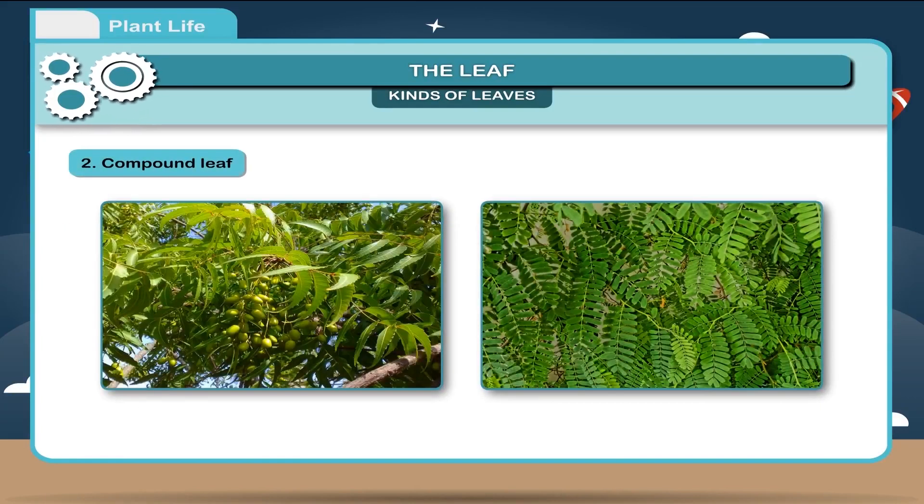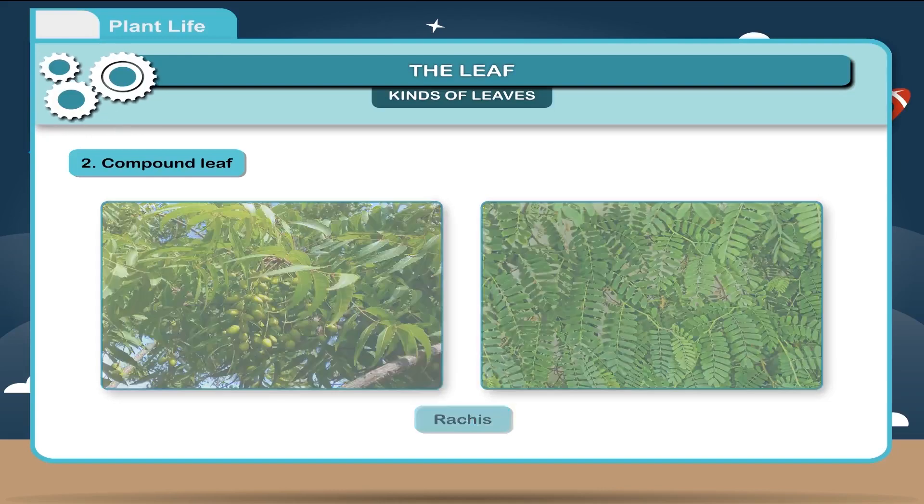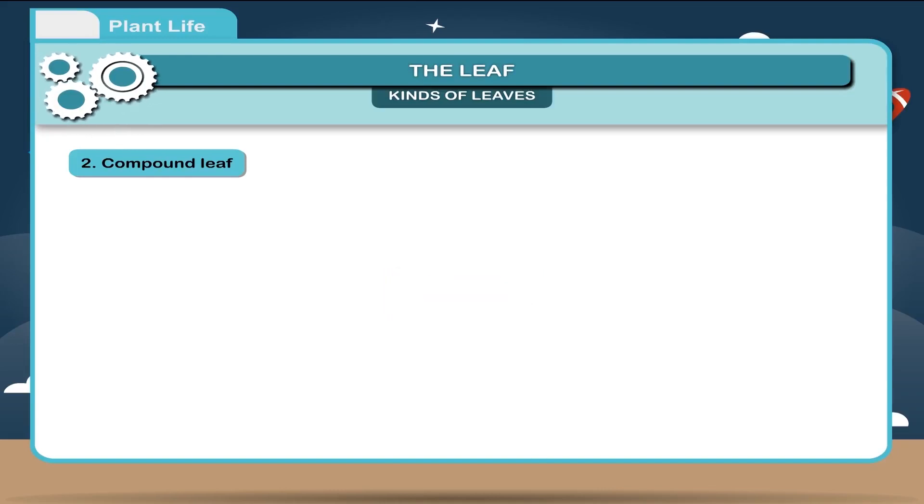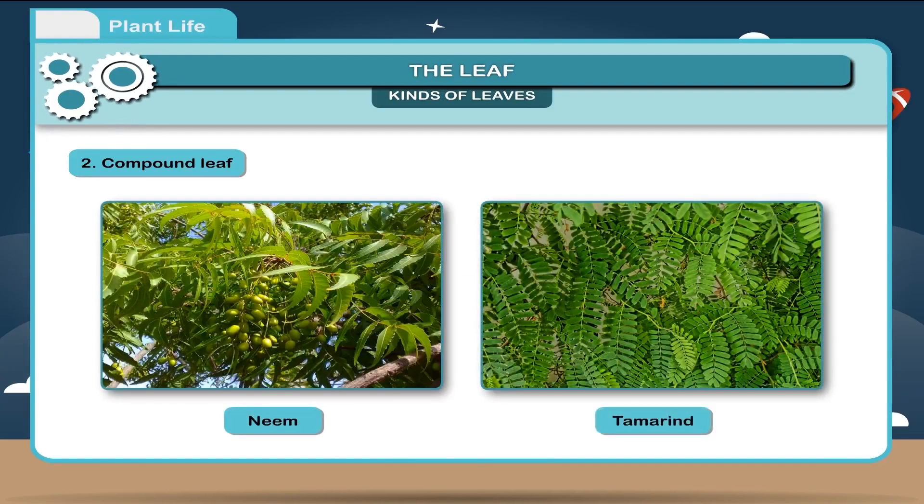Second, compound leaf. When lamina is cut down up to the midrib or petiole to form many leaflets, such a leaf is called a compound leaf. The stalk or main stem of a compound leaf is called rachis. Example: leaves of neem, tamarind, etc.